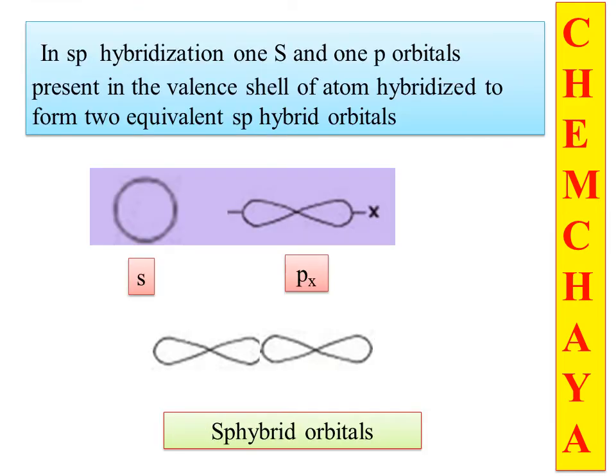When these orbitals combine together, you get hybrid orbitals. Depending upon which atomic orbitals combine, in SP hybridization, one S orbital and one P orbital present in the valence shell of an atom hybridize to form two equivalent SP hybrid orbitals.